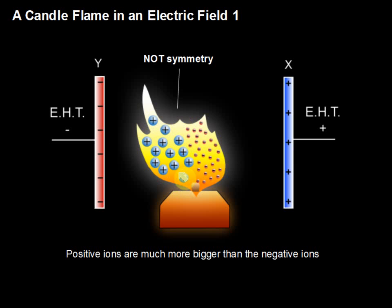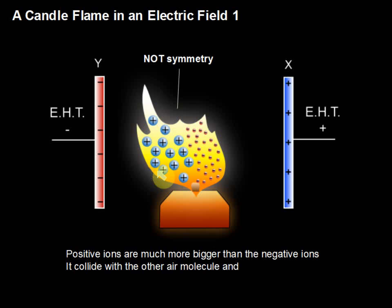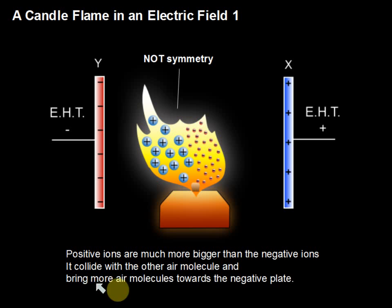The positive ion is the alpha particle — it's much bigger. As these positive ions move to the left, they collide with the other air molecules around here, and that collision moves the air to the left. This creates something like a wind blowing the flame to the left, bringing more air molecules toward the negative plate. That's why the flame is not symmetrical — it tends to move towards the negative plate. That's what happens if you put a candle flame inside an electric field.